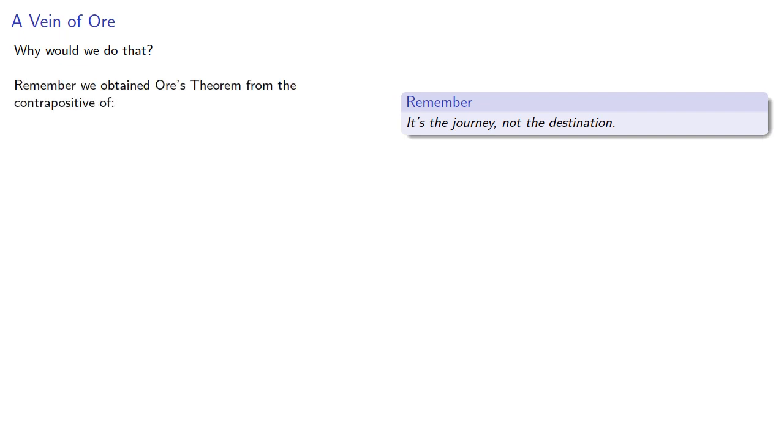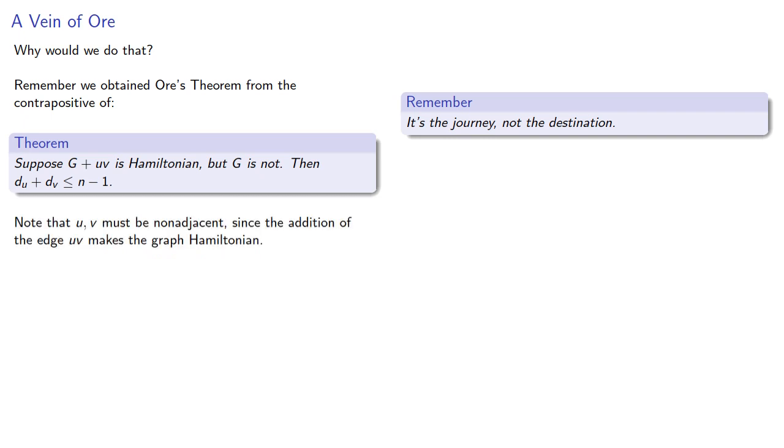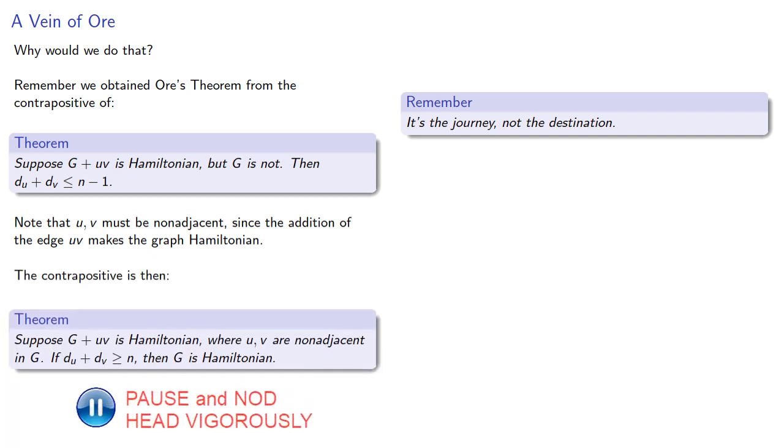Remember we obtained Ore's theorem from the contrapositive. Note that our vertices u and v must be non-adjacent since the addition of the edge uv makes the graph Hamiltonian. And so our contrapositive is: if we add an edge uv between two vertices whose degree sum is at least n.